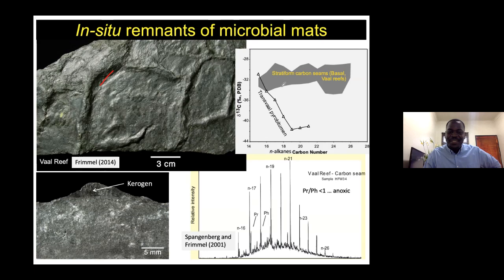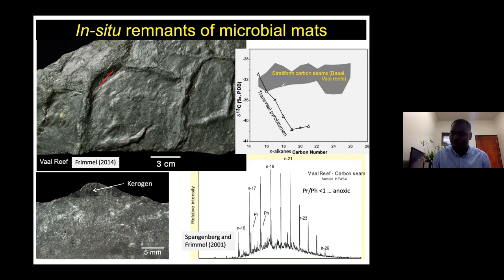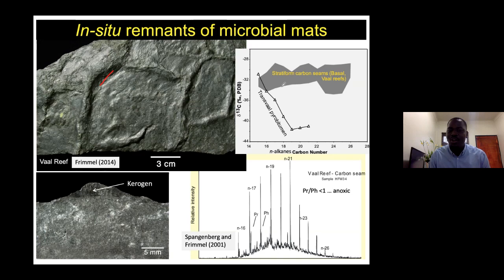Another question: what about the gold in the Dominion Reef? We did look into that — remember, the gold in the Dominion is not as much as in the Wits, so these are not exactly the same type of gold deposits as the Black Reef. It's actually a different regime — the time it was formed is a different regime from the Black Reef. I have never studied the Dominion Reef in detail and it would be difficult to say there is any link or mode of occurrence related to the Black Reef.